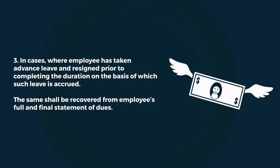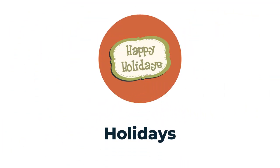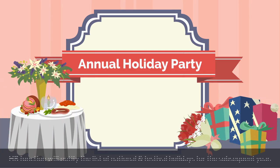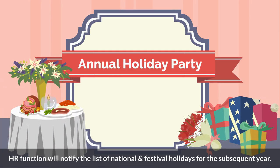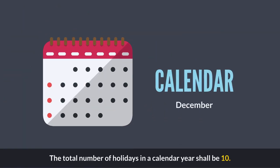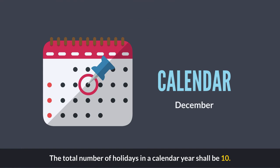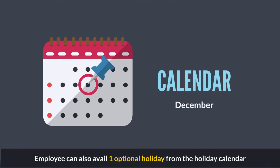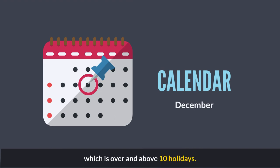In cases where an employee has taken advance leave and resigned prior to completing the duration on the basis of which such leave was accrued, the same shall be recovered from the employee's full and final settlement. Each year in December, the HR function will notify the list of national and festival holidays for the subsequent year. The total number of holidays in a calendar year shall be 10. Employees can also avail one optional holiday from the holiday calendar, which is over and above the 10 holidays.